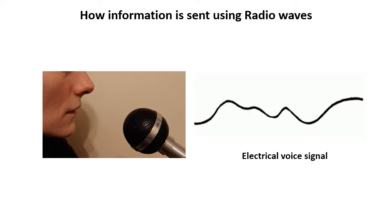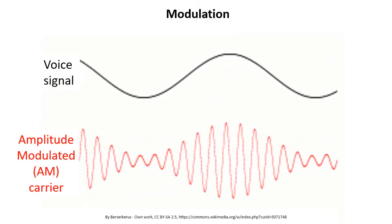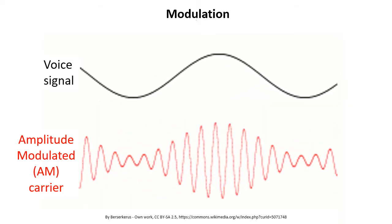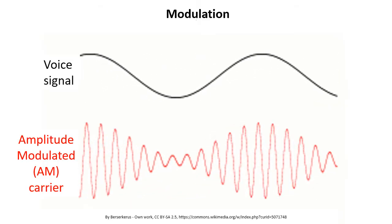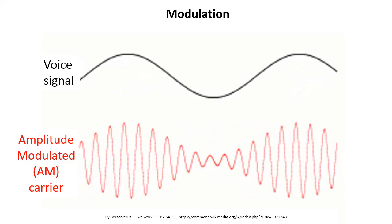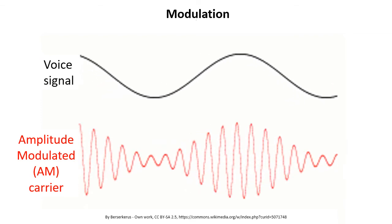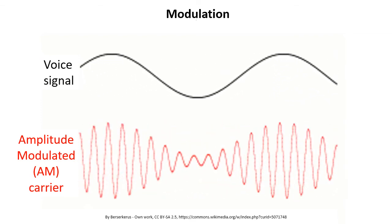Sound waves hit a diaphragm in the microphone that vibrates, moving a magnet near a coil, and this creates a small electric current that represents the sound. This electrical signal is used to modulate — which means modify or vary — the radio wave, called the carrier, that is transmitted. Early radios used amplitude modulation, where the amplitude, the signal strength of the carrier wave, is varied in proportion to that of the voice signal being transmitted.